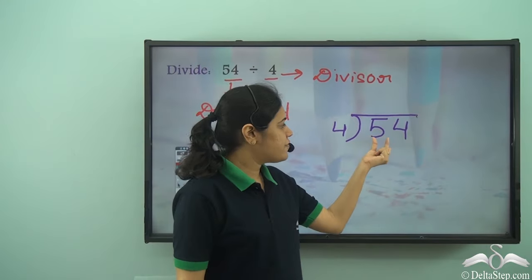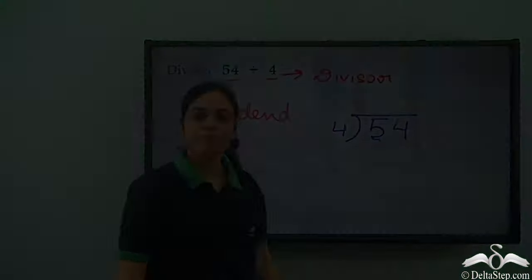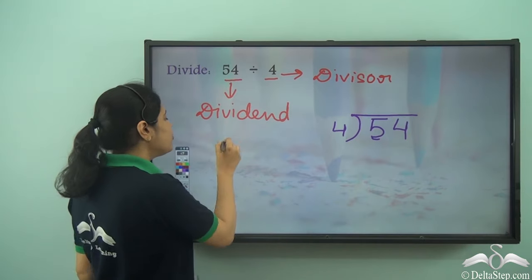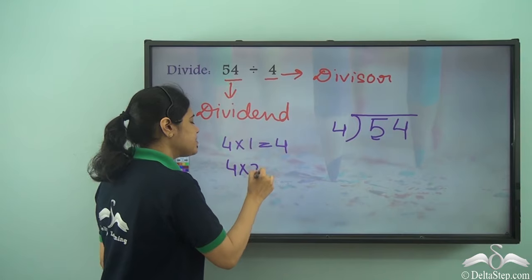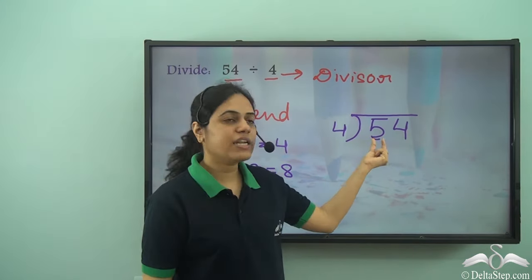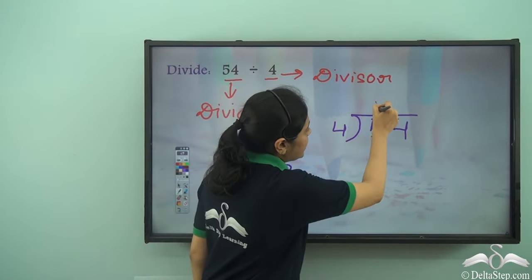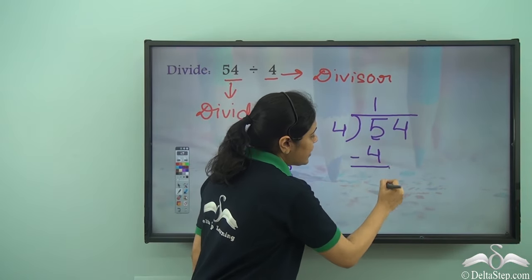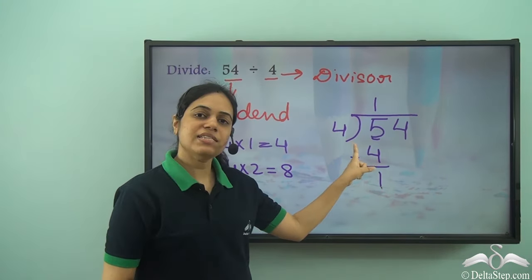First I take the first digit of the dividend, that is 5. How many times does 4 go into 5? I know 4 into 1 is 4, 4 into 2 is 8. 8 is greater than 5, so 4 goes into 5 just one time. 1 into 4 is 4 and I subtract this to get 1.